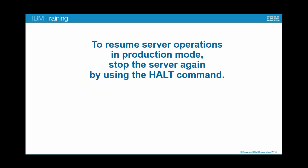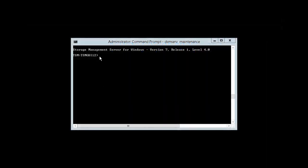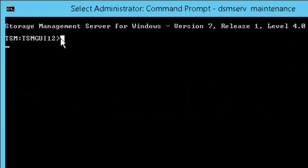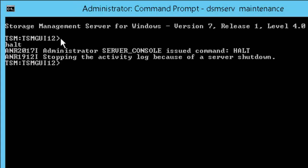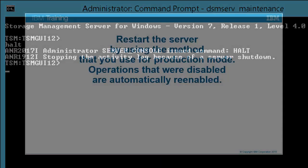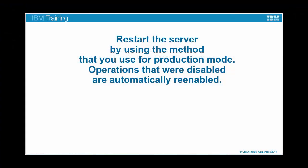To resume server operations in production mode, stop the server again by using the HALT command. The server is running in the foreground, so you can issue the HALT command in the Server Console window. Type HALT and press ENTER. Then restart the server by using the method that you use for production mode. Operations that were disabled during maintenance mode are automatically re-enabled.